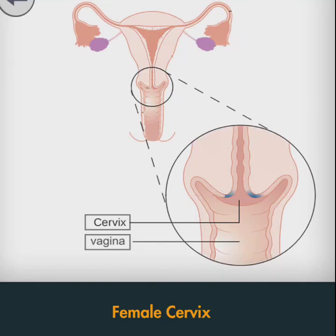Today we learn about the female cervix. The cervix is the lower portion of the uterus, an organ of the female reproductive tract. It connects the vagina with the main body of the uterus, acting as a gateway between them. Anatomically and histologically, the cervix is distinct from the uterus, and hence we consider it as a separate anatomical structure.